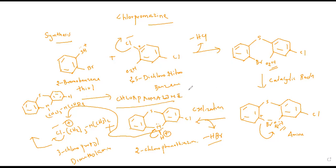Chlorpromazine is majorly used as an antipsychotic drug. It is prescribed for mental illness like schizophrenia, which is characterized by hallucinations, delusions, etc. This is an important synthesis — chlorpromazine is a major tranquilizer or neuroleptic drug.